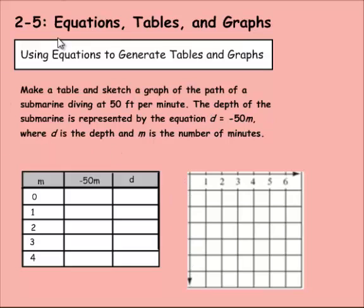Alright, so for example, we would have m as our input, right? One minute passes, two, three, four. And then d is our output, so our depth decreases as our minutes increase. So let's do this here. We have negative 50 times m. So if m is zero, it would be negative 50 times zero. Anything times zero is going to be zero. And that makes sense. After zero minutes, we haven't dropped into the water yet.